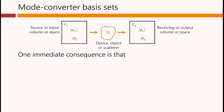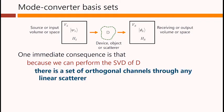One immediate consequence is that, because we can always perform the singular value decomposition of some operator D here, there is a set of orthogonal channels through any linear scatterer.